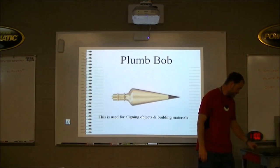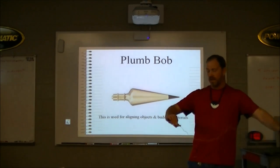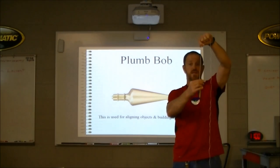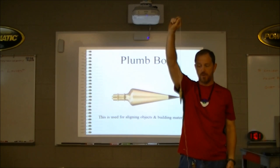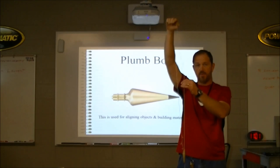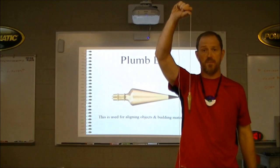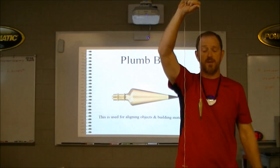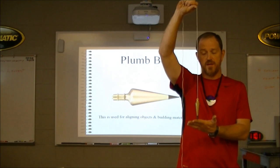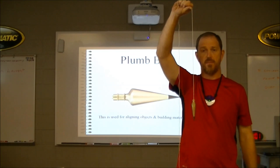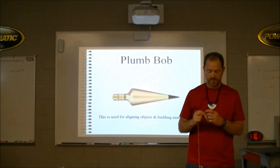A plumb bob is just a pointed weight with a string through it. It's used to transfer a point from the ceiling down to the floor, or vice versa. You hold it, let it stop swinging, and mark that point on the ground. It's commonly used in construction.